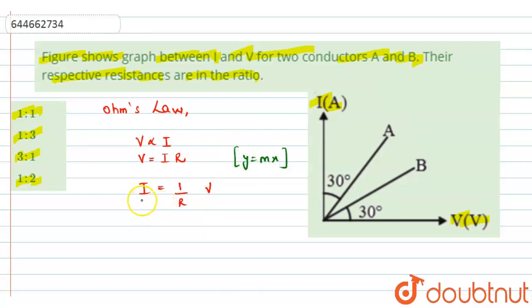So from here, I can write the I has been plotted on the Y axis. The voltage has been plotted on the X axis. So this 1 by R will represent the slope of the graph, right, slope of the graph.